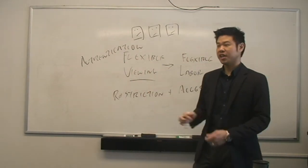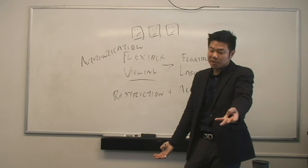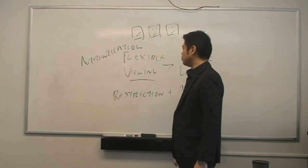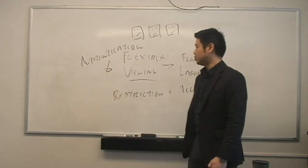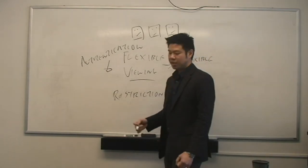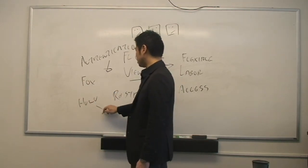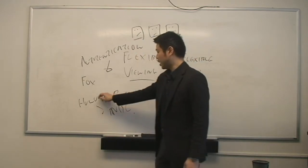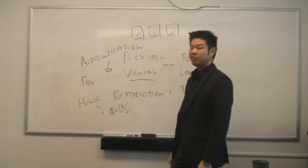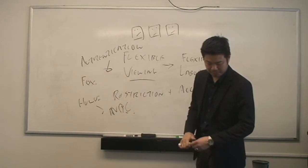And so authentication systems become bars to entry. If you need a Fox authentication system, you need a Hulu authentication system, but then you need another one for NBC. So you have made three different accounts, that's three different user agreements. That's three different entities that you are providing more data for. So it's not only that it's a bar to access of entry, but it's also an access point for the corporate entity.